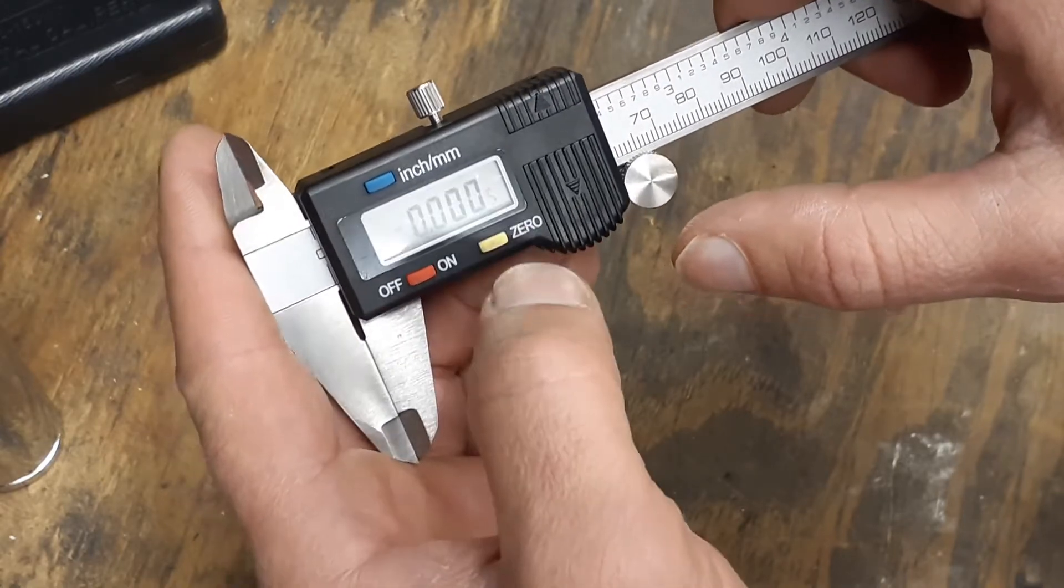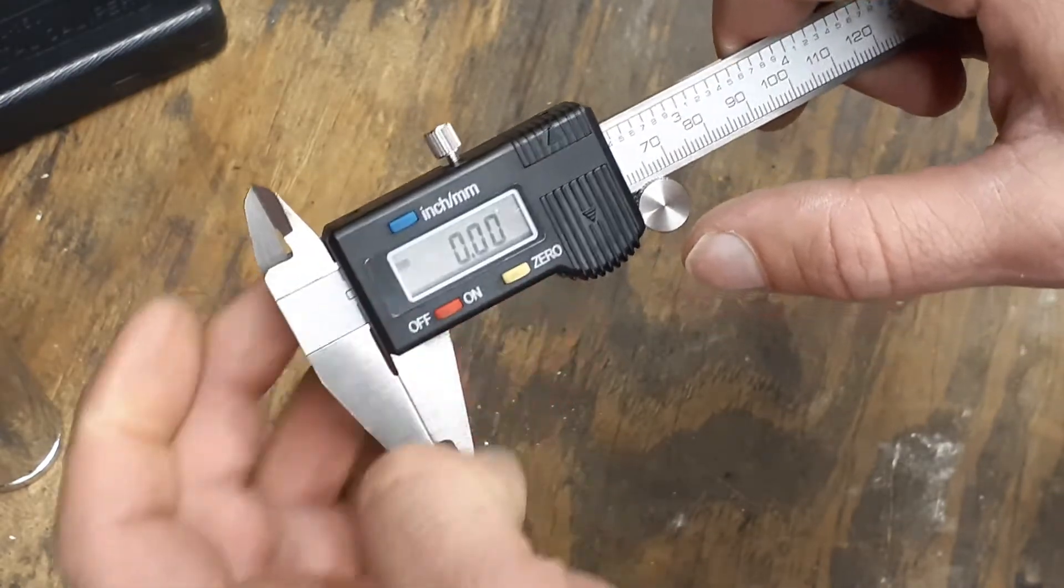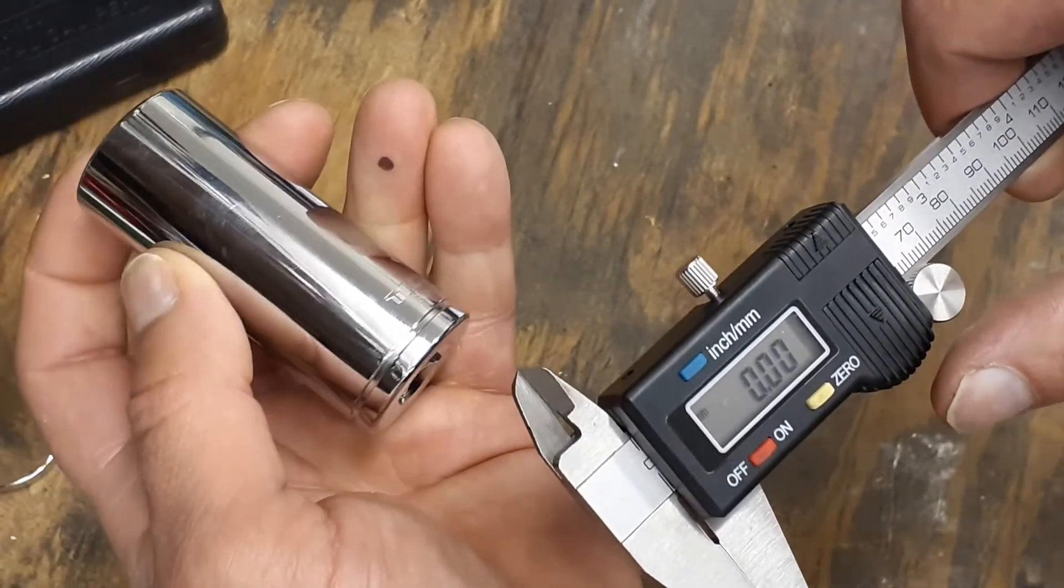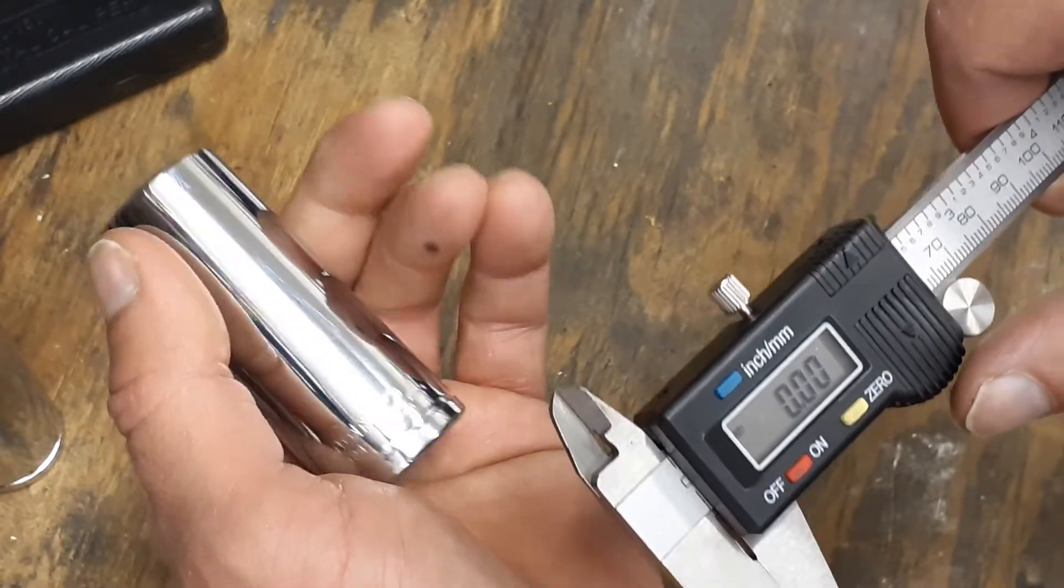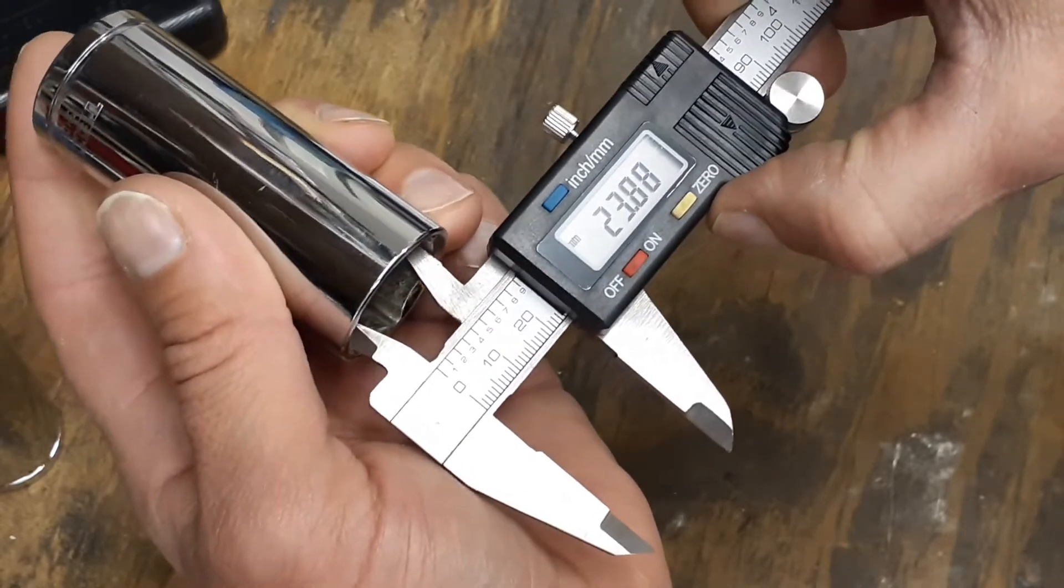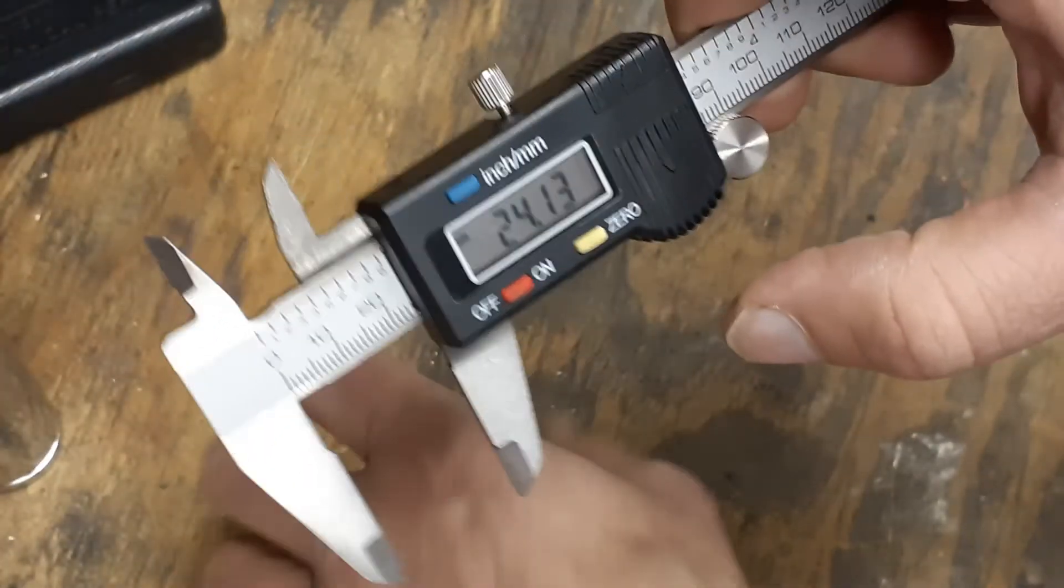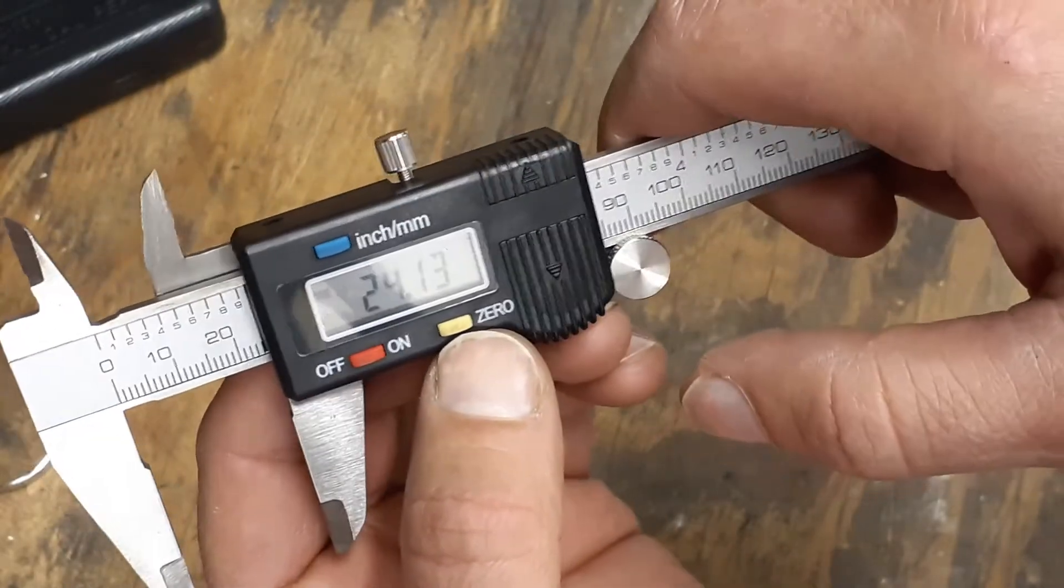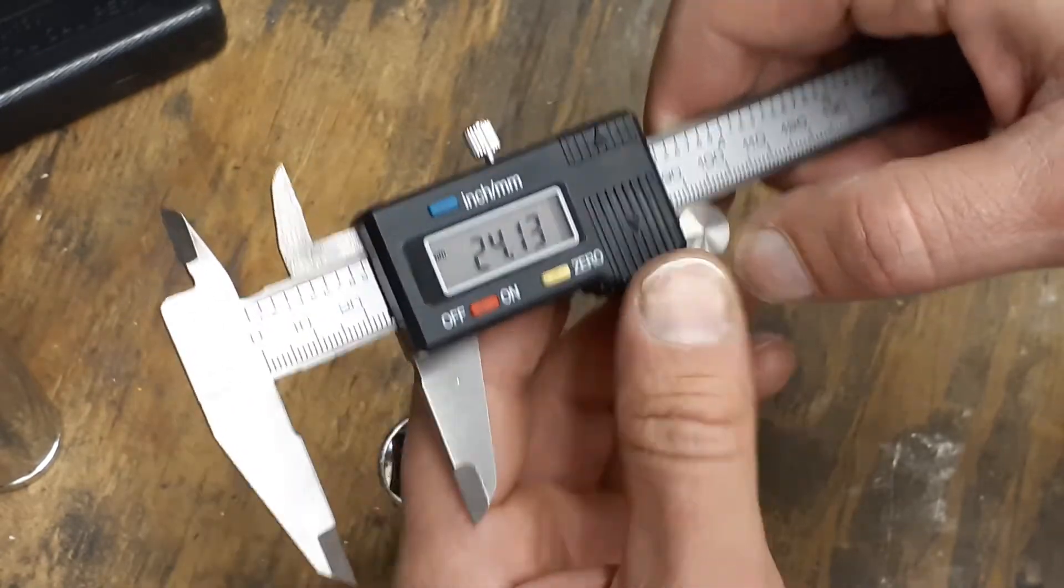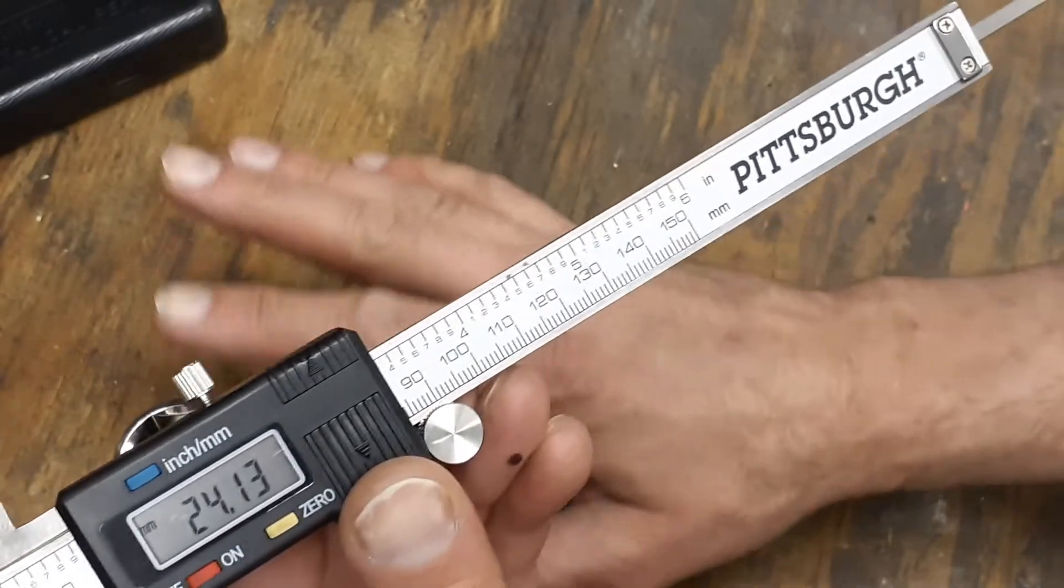Then we'll use this to change it over to millimeters. All right, now we'll measure. This is a 24 millimeter socket, and we're just going to go ahead and measure from side to side in here and just see how far. Okay, and we got 13 thousandths. So this is a 13 thousandths difference on the inside of it. So you got a little wiggle room. These aren't, like I said, maybe these aren't the tightest sockets.